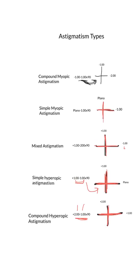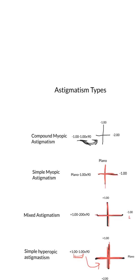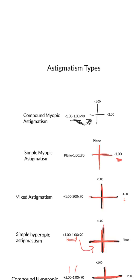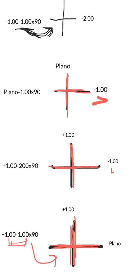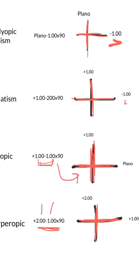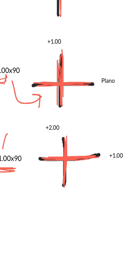So those are the five different types of astigmatism. Compound myopic astigmatism is when you have two minus numbers on the optical cross. Simple myopic astigmatism is when you have one minus number on the optical cross. Mixed astigmatism is a mix of positive and negative — hyperopia and myopia. Simple hyperopic astigmatism is when you have one positive number and the other is zero or plano. And compound hyperopic astigmatism is when you have two positive numbers. Hopefully that helps — thank you.